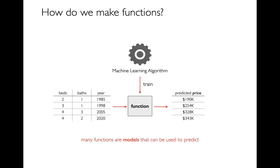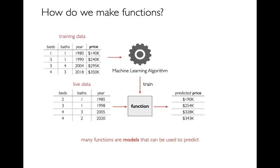The idea of machine learning is that instead of having a human write these functions, we're going to have a computer automatically generate them. The way they're going to do that is by learning by example. We'll feed in a bunch of training data — houses that have sold for different amounts with different bedrooms and baths — and we're going to infer things like how much is a bedroom worth, how much is a bath worth, how useful is it to have a newer house. Then we generate that function and use it to make predictions on other data.